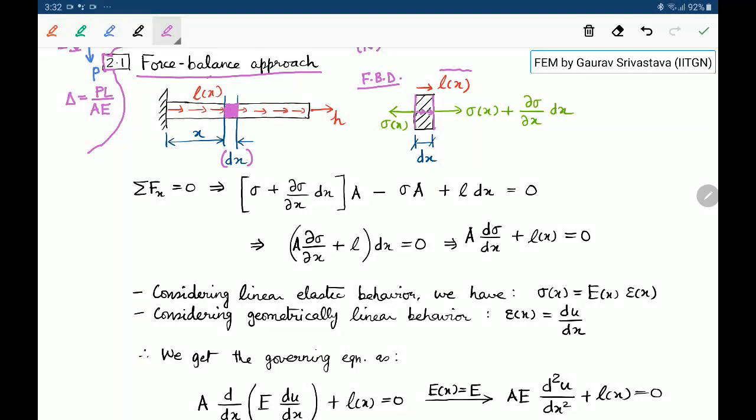Now if we write the force balance equation or if you write summation of F in the x direction equal to 0, if you take this stress and multiply it by the area of cross section, that is the force given by that. Then we take this stress and multiply this by area, it gives the other force.